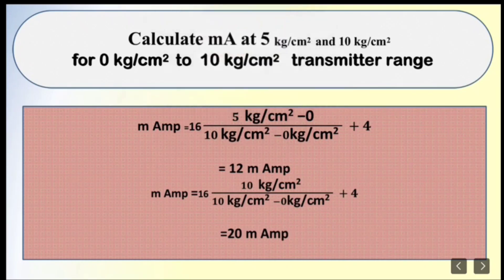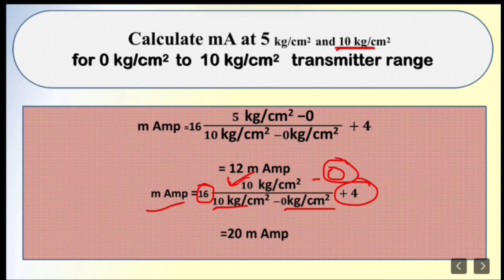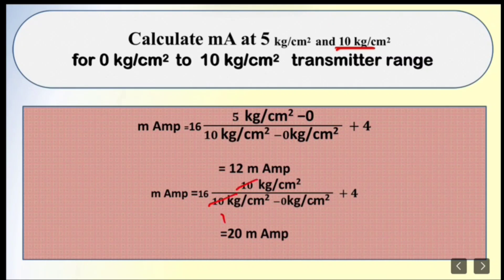Now let's calculate for 10 kg/cm². mA = 16 × (10 − 0) / (10 − 0) + 4 = 16 × 1 + 4 = 20 milliamperes. So at maximum range (URV), the output is 20 mA as expected.